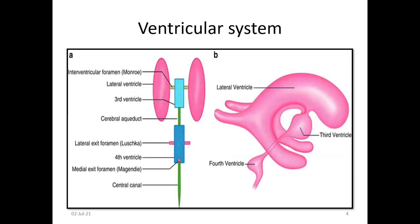Looking at the ventricular system of the brain, the two lateral ventricles are connected to the third ventricle by the interventricular foramen or foramen of Monro. The third ventricle connects to the fourth ventricle by the cerebral aqueduct. The two lateral recesses of the fourth ventricle are called the foramina of Luschka and the median recess is called the foramen of Magendie. All drain into the cisterna magna and subarachnoid space. This is the central canal of the spinal cord.